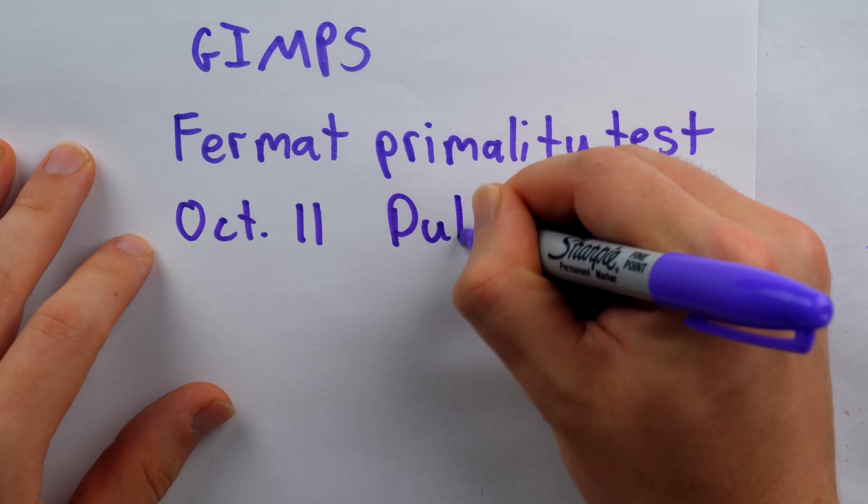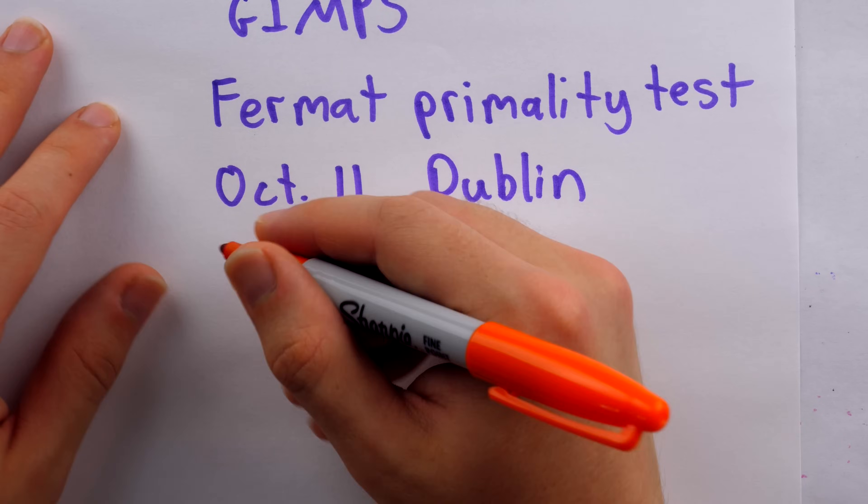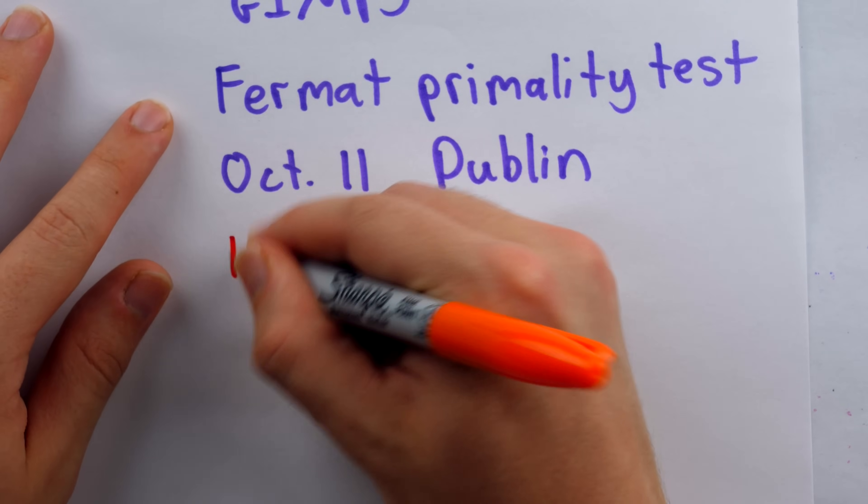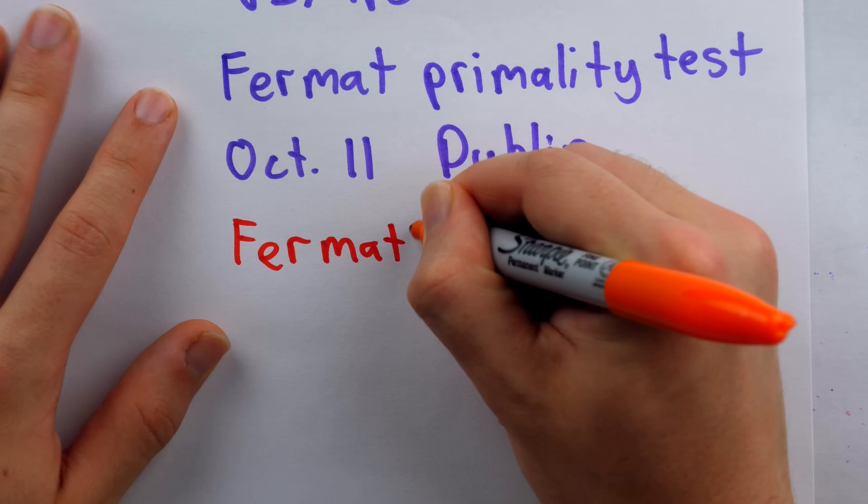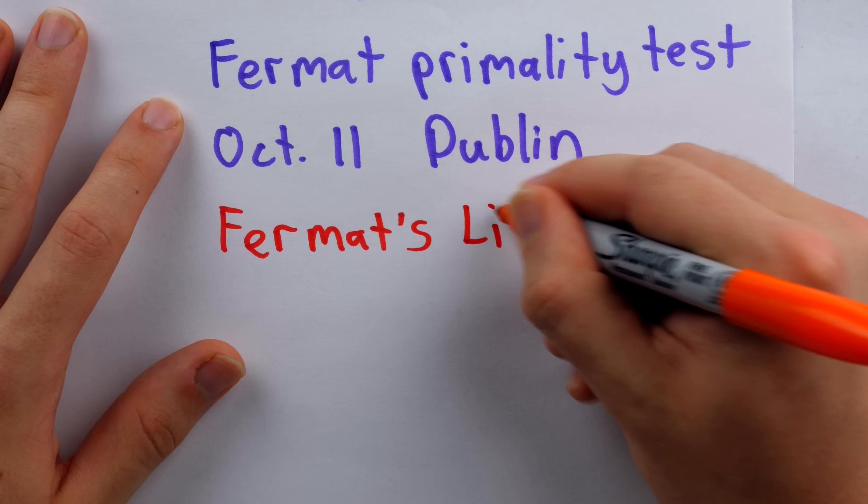So the Fermat primality test reported that this new prime number was probably prime actually on October 11th of this year in Dublin, Ireland. This primality test, just to give you the gist of it, is based on a fundamental result in elementary number theory called Fermat's Little Theorem.